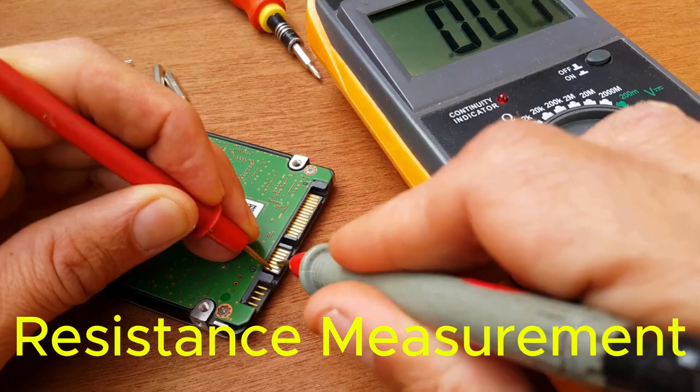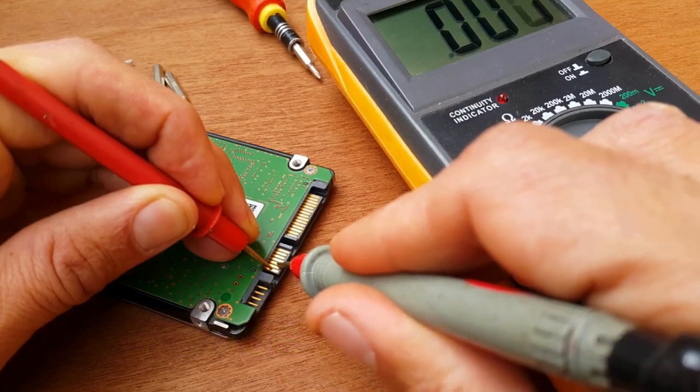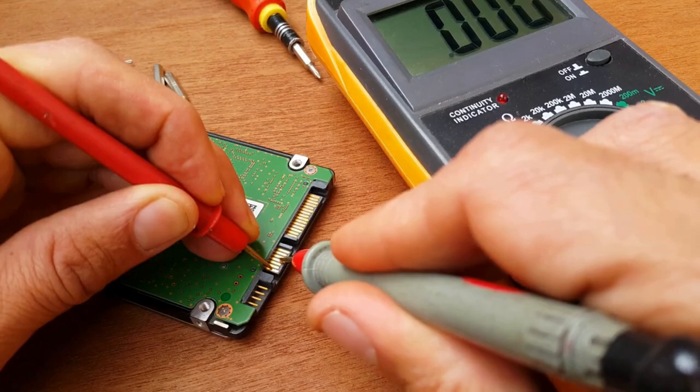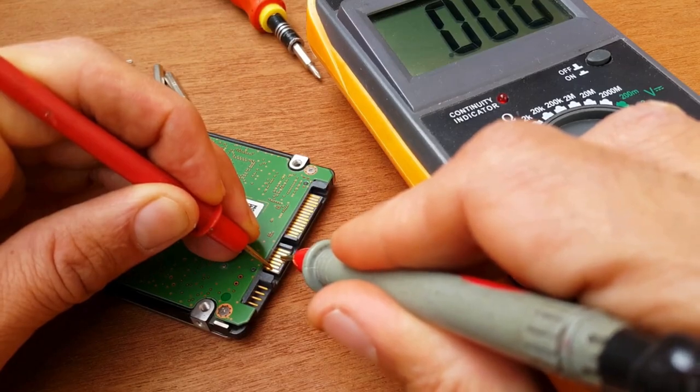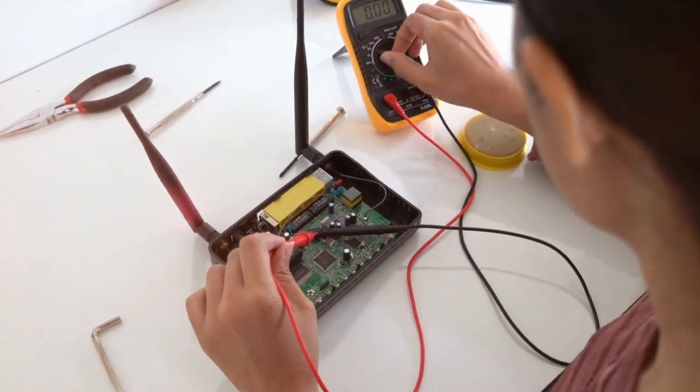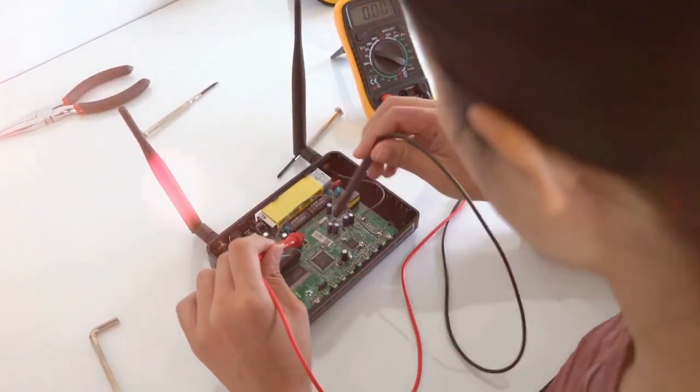Resistance measurement is another critical function of a multimeter. Resistance, measured in ohms, reflects how much an object opposes the flow of electricity. By measuring resistance, users can test the continuity and condition of circuits, wires, and components.